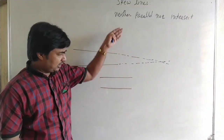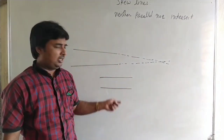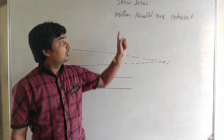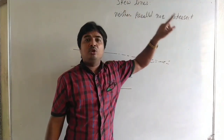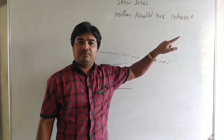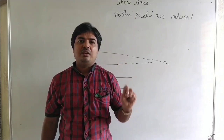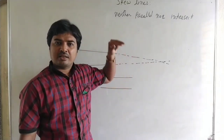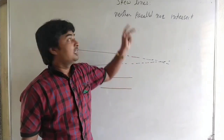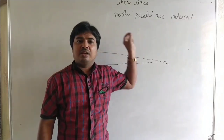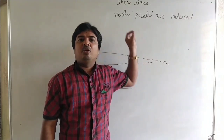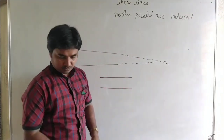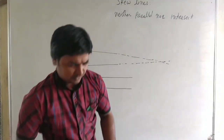In a plane, two lines are either parallel or intersect. But if the lines are neither parallel nor intersect, then the two lines lie on a different plane, and those lines are called skew lines. Skew lines means lines that are neither parallel nor intersecting — that is, non-coplanar lines.